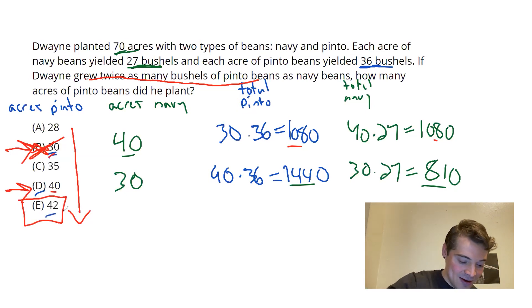If I had 42 acres of pinto, that means I would need 28 of navy to get to 70. And then, in terms of total, I would have 42 times 36. That would be 1512.